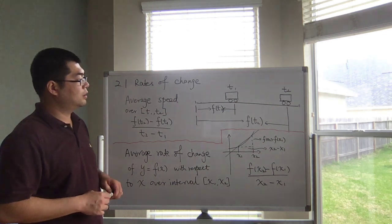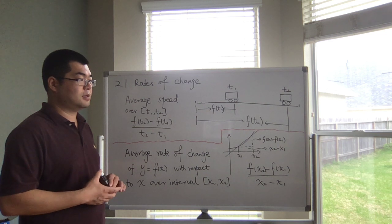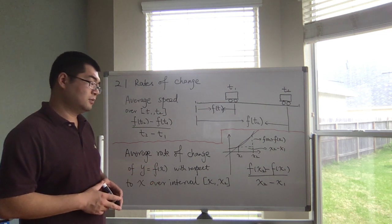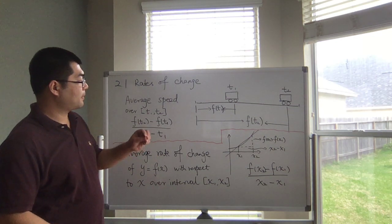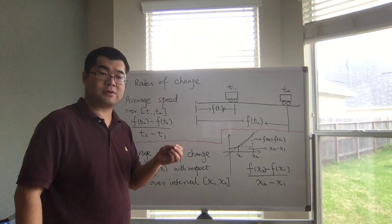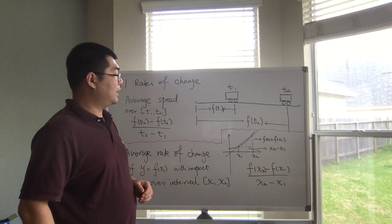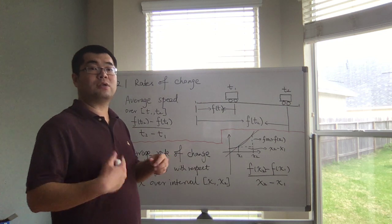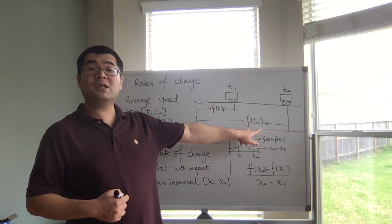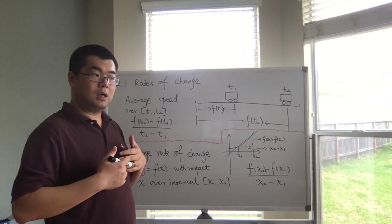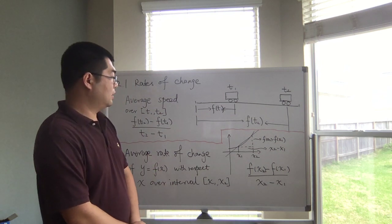Suppose we have a car that started driving. Right now I'm in Houston, Texas, and if I want to go to Dallas or even longer to Chicago — anyway, I use a function f that stands for the distance function. After t1 hours, f of t1 stands for the miles driven. At t equals t2, f of t2 is the distance from the beginning after t2 hours.